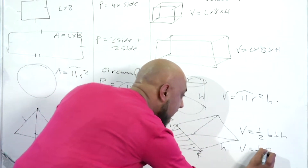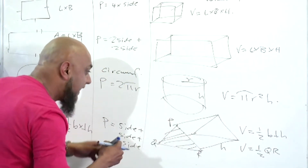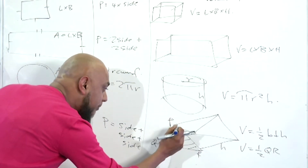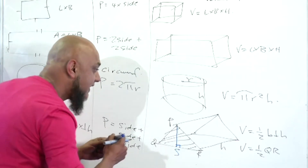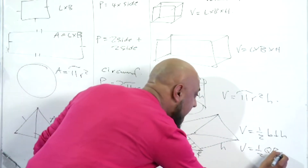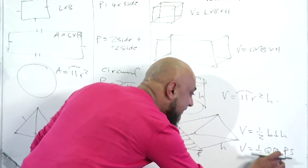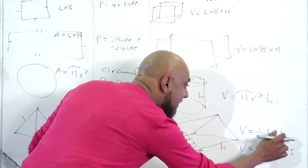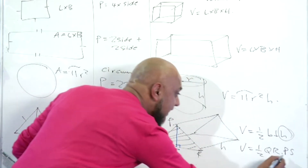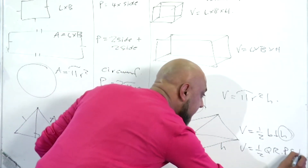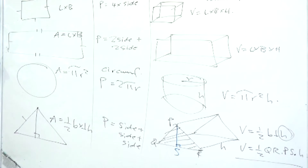So the volume of the triangular prism would be: half your base QR times your perpendicular height — they might give you a perpendicular height in triangle PQR — times PS. So: half base times height times big height times H. That would be the volume of your triangular prism.